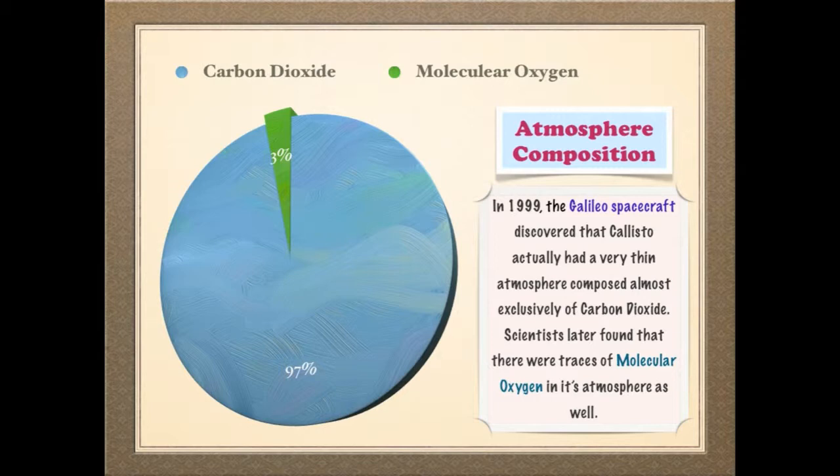This discovery was made in 1999, when the Galileo spacecraft — named after the man who discovered this moon — flew by Callisto. Only later did scientists discover small amounts of molecular oxygen in its atmosphere.